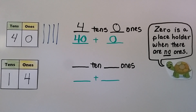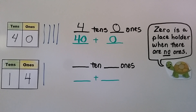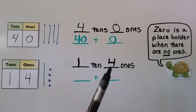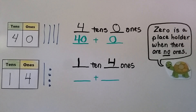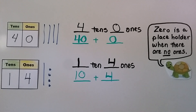Forty, written in expanded form, is forty plus zero. Here we have fourteen — that's one ten and four ones. We draw one line for one ten and four dots for four ones. We have one ten and four ones, and we can write it in expanded form as ten plus four. In expanded form, we write the value of the tens place plus the value of the ones place, with a plus sign between the values.